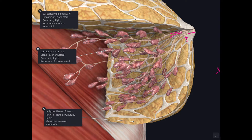Each duct drains a segmental system of smaller ducts and lobules. Each segmental duct divides into a number of terminal ducts. From the terminal duct, numerous secretory glands pouch out to form grape-like clusters. The area of breast parenchyma drained by one terminal duct is known as a lobule. The area of parenchyma drained by one lactiferous duct is known as the lobe of the gland.